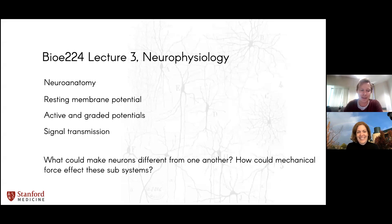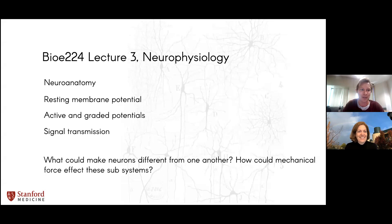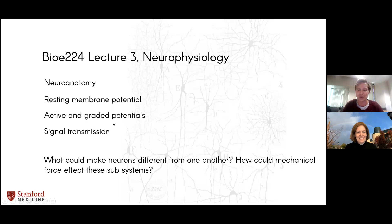This goes hand in hand with Kim's fundamental lecture on ultrasound physics. You need to really understand the brain and the ultrasound to put the two together. In this lecture we're covering the basics — which you've probably seen in introductory biology courses — neuroanatomy, the architecture of the brain at different scales, resting membrane potential, how individual neurons hold charges, and the active and passive methods they use to do that. We're also going to look at signal transmission: how different neurons send signals from one to the next.